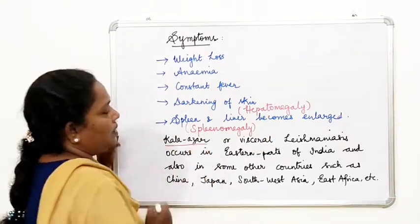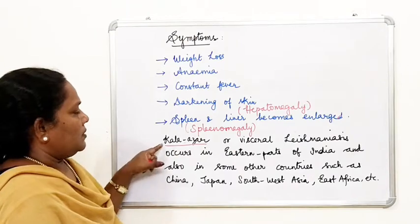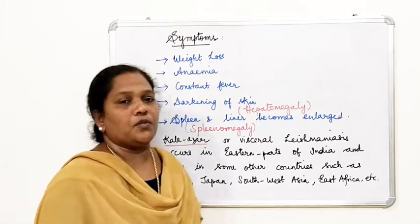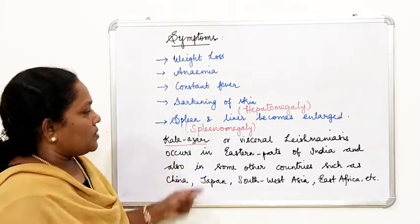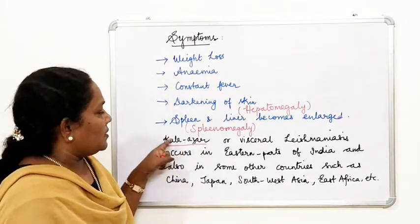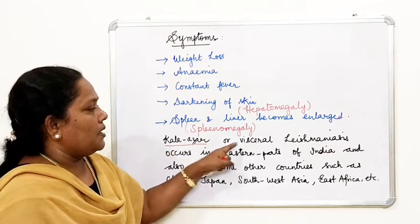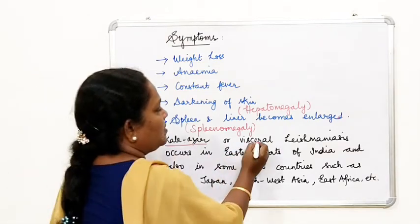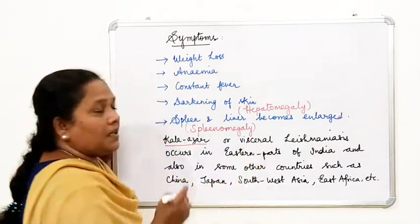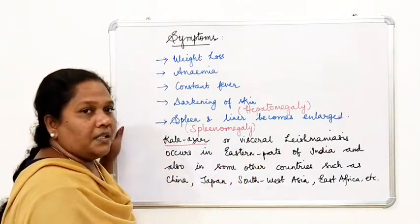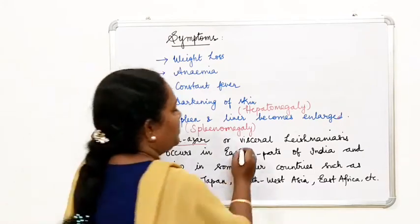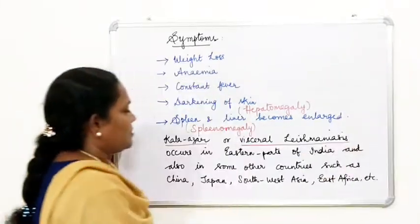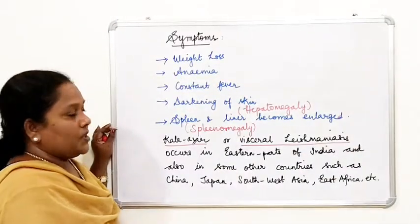Kala Azar is caused by the protozoan parasite Leishmania donovani. For this reason, another name for Kala Azar is leishmaniasis. Specifically, Kala Azar caused by Leishmania donovani is called visceral leishmaniasis.